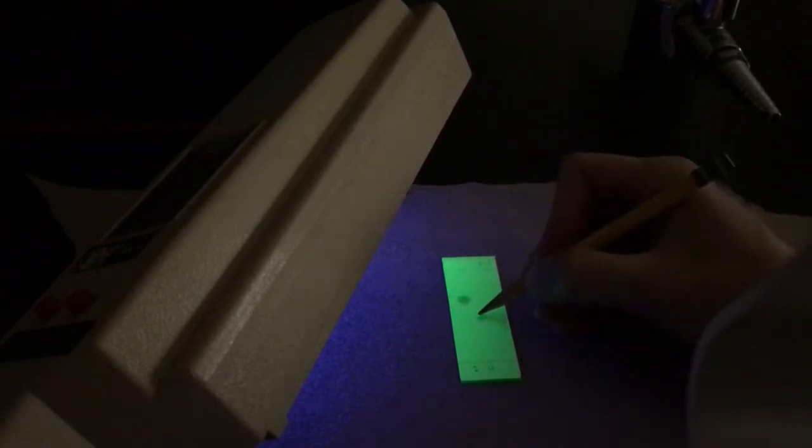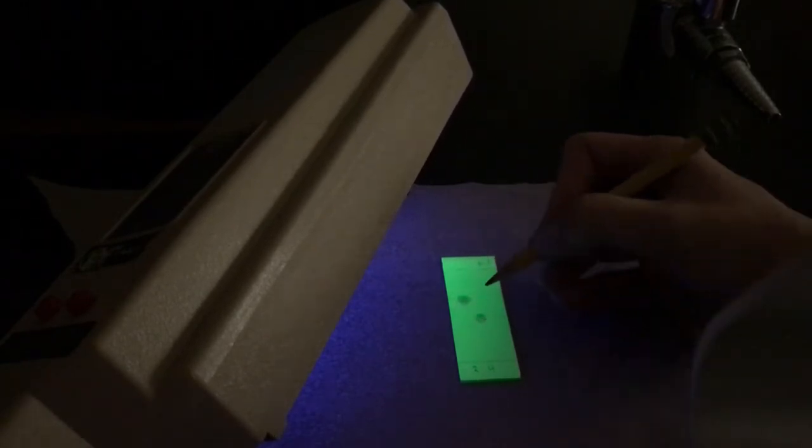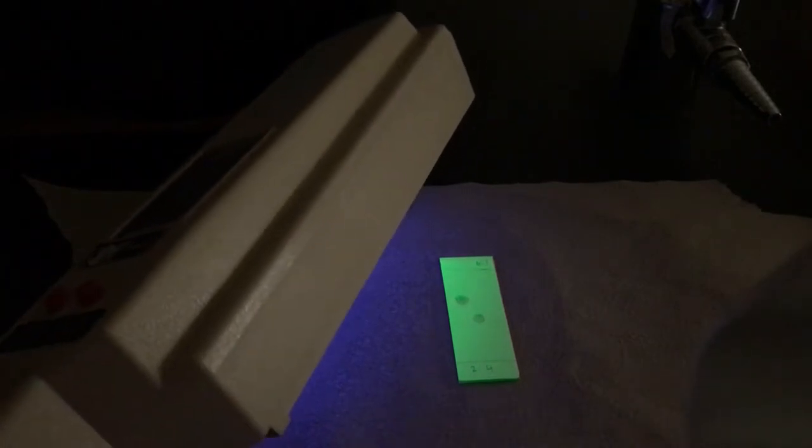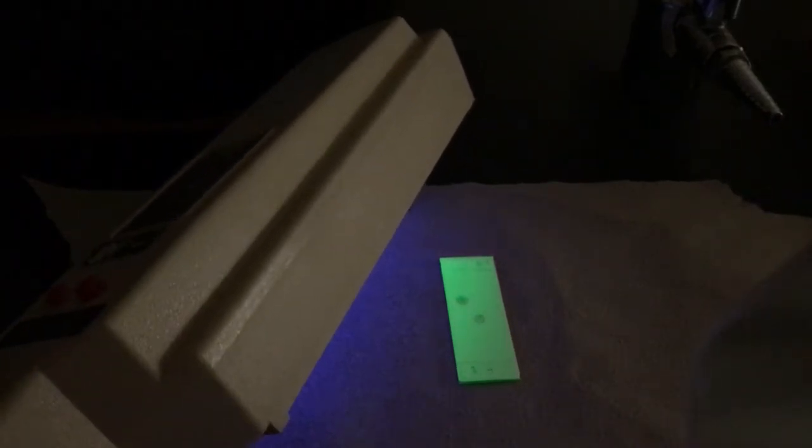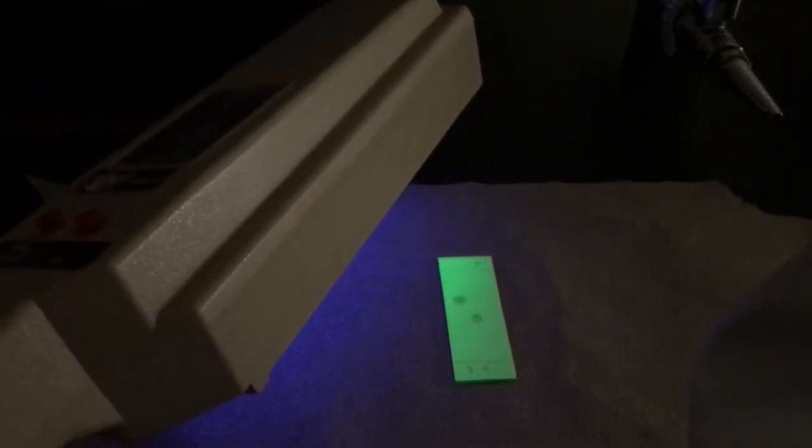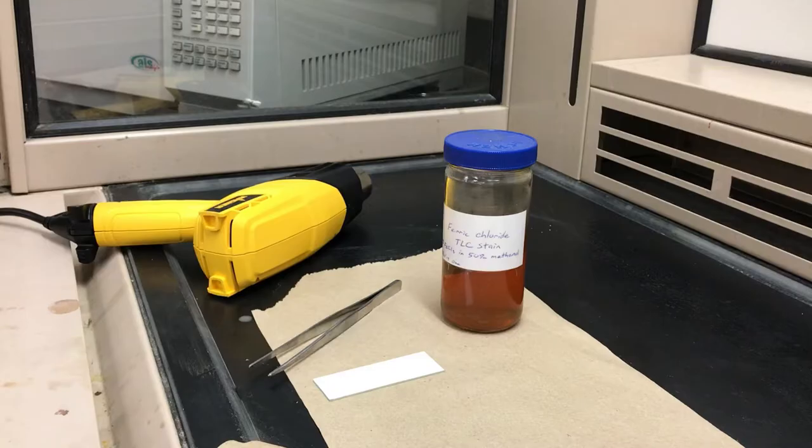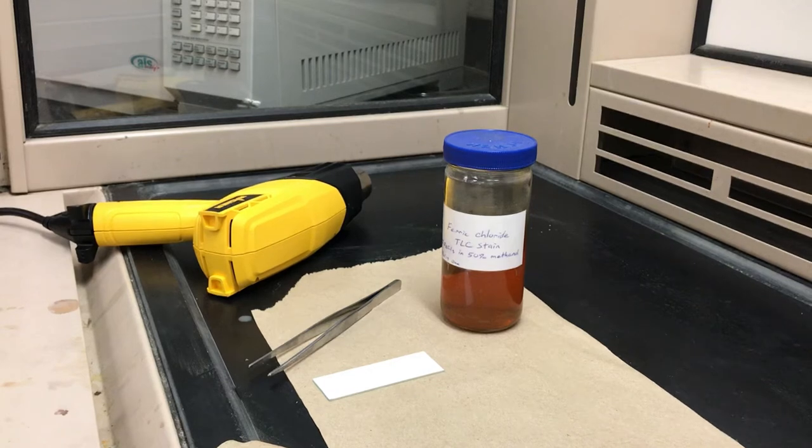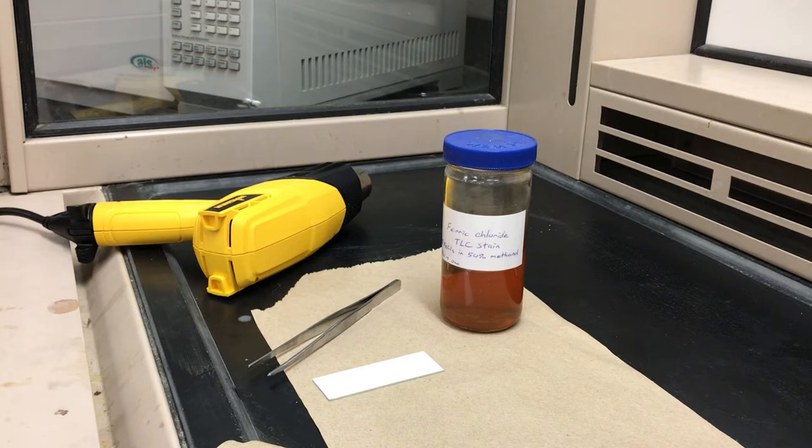What you can do is take your pencil and circle those spots because when you take the UV lamp away they are going to disappear. UV light is non-destructive so the compounds haven't been changed after you've tried that method. So pretty much everyone will try that first, but you can then take the plate and then follow it up with another method.